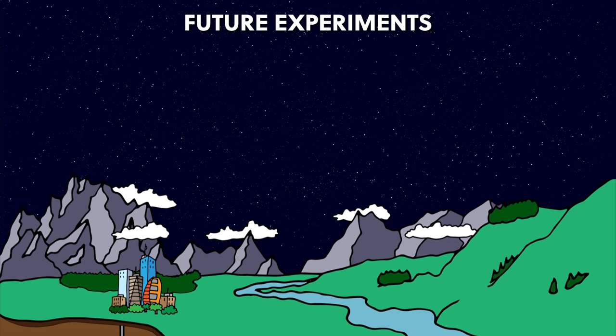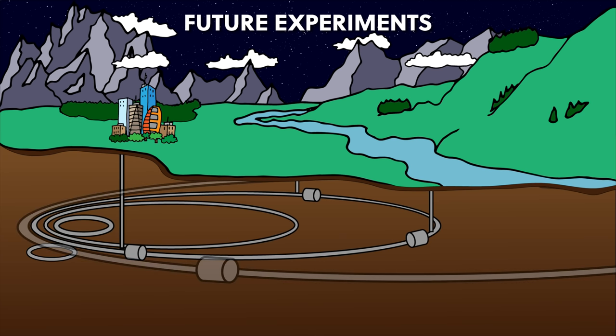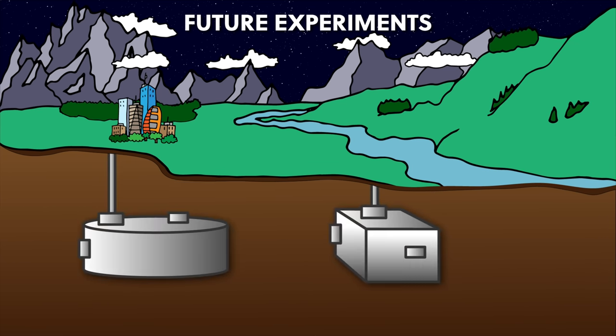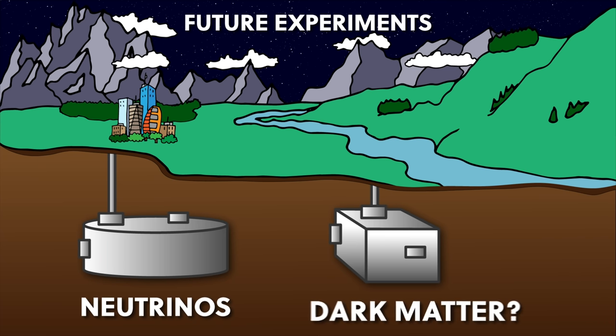So what does the future of particle physics look like? Historically we've built bigger and bigger accelerators to collide particles at higher and higher energies in order to recreate the conditions billionths of a second after the big bang. But building new accelerators bigger than the ones that exist today would cost tens of billions of dollars, which might be a tough sell. But there are many experiments we can still do with the current generation of particle accelerators, and we've also got several large detectors without particle accelerators — mostly giant vats of liquid deep underground looking at high energy neutrinos or trying to detect dark matter particles.